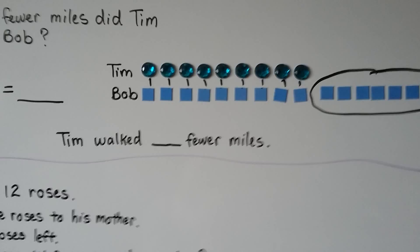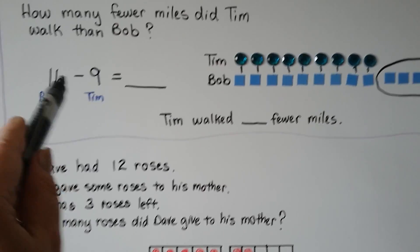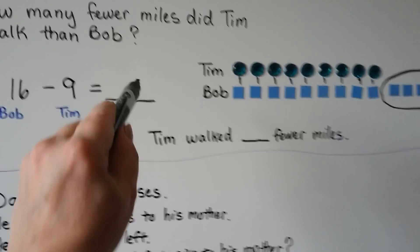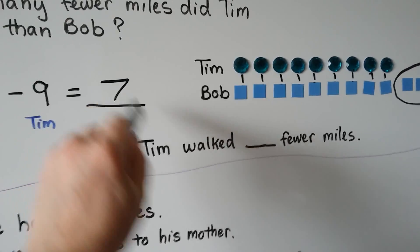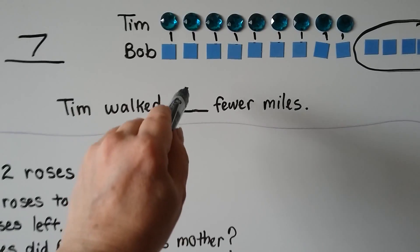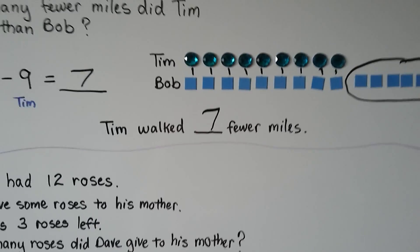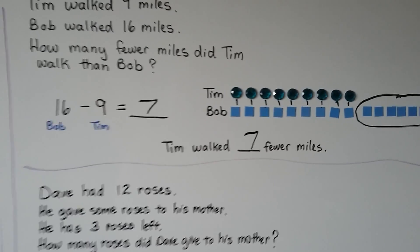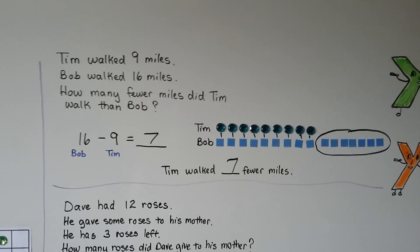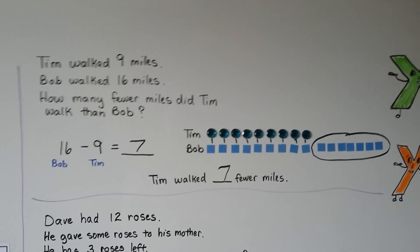So 16 minus 9 is equal to 7. Tim walked 7 fewer miles. We just compared the counters next to each other.